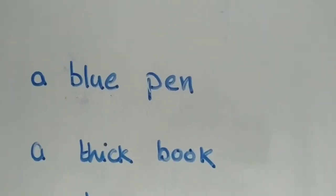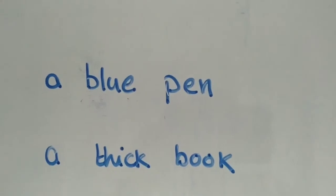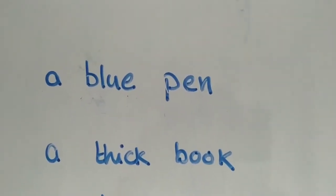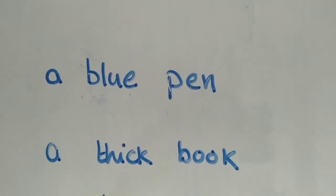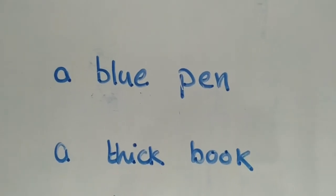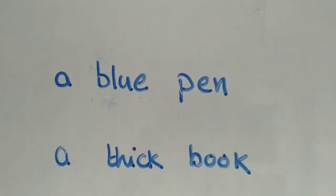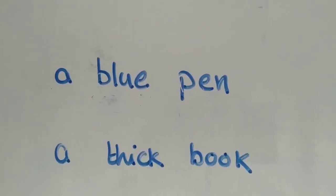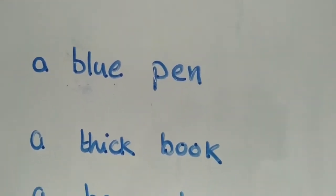Now, look at this book. I have got a thick book. A thick book. So, book is a noun — a thing, a naming word. I am talking about what type of book. How does the book look? It is a thick one. So, the word thick — thick book.